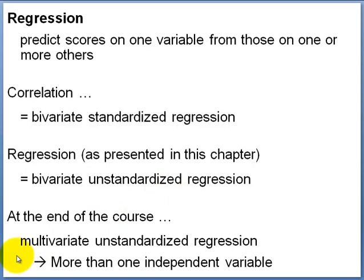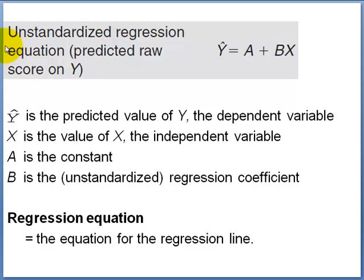At the end of the course we may have time to look at multivariate regression — regressions that have two or more independent variables. The emphasis in regression is on prediction. We've already looked at the formula for predicting z-scores, that is the bivariate standardized regression equation, but now we're looking at the unstandardized regression equation.